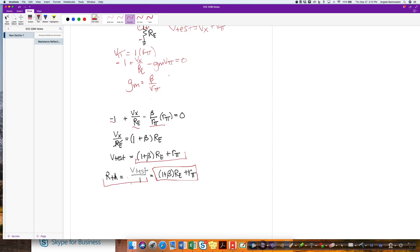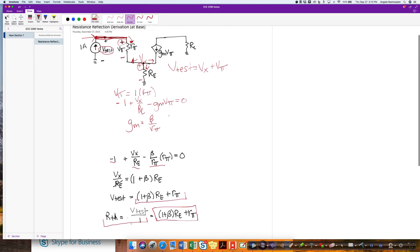So now whenever I see the same form in the small signal analysis, I can now say that I can do this by inspection. Instead of having to constantly re-derive that, I'm going to say that whenever I am looking in at the base, which is at this node,